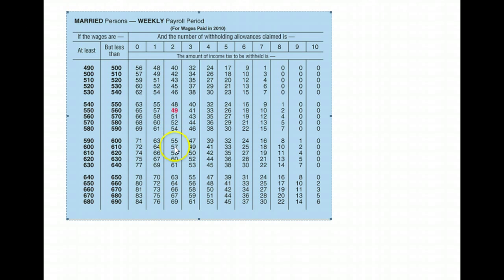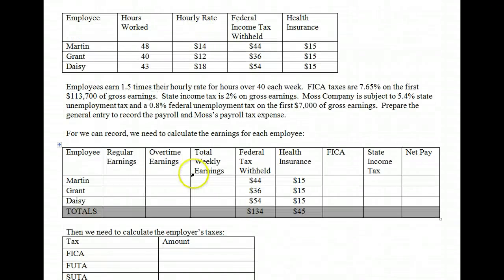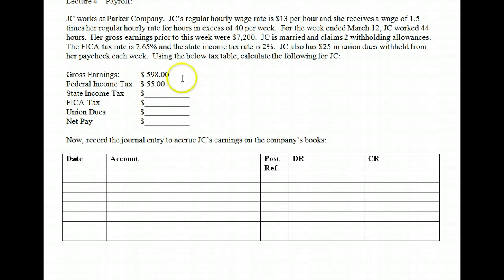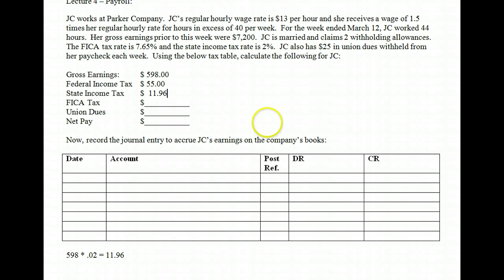So we go in and that would be the federal income tax — $55. That's how you calculate simple federal income tax. If earnings exceed what the chart has, there is a percentage method, but we will not learn that in principles of accounting. So we know federal income tax is $55. Now let's talk about state income tax. The state income tax is a 2% rate on all earnings, so we take $598 times 2% and get $11.96.